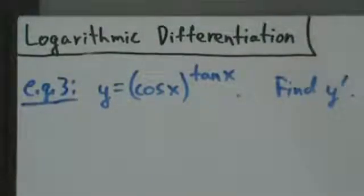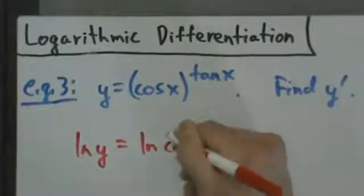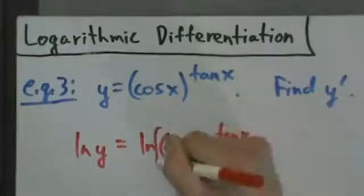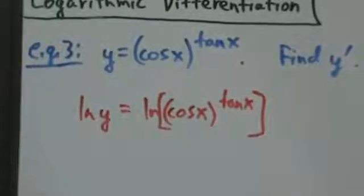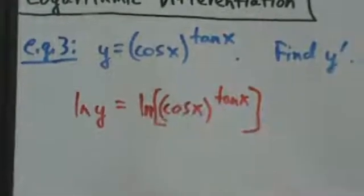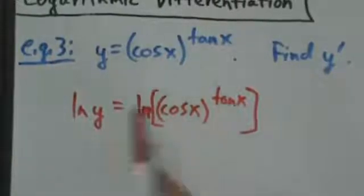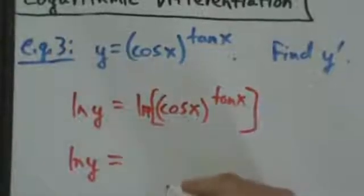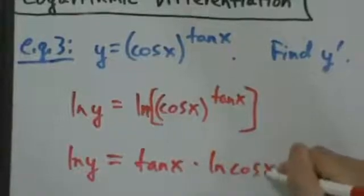The first step is the same. Since y is already by itself, we just take the natural log of both sides. So natural log of y equals natural log of cosine of x to the tangent of x. We'll put square brackets just to make it easier to see what's happening. The second step is always to use that pre-calculus power rule for logs, which says you can take the exponent out and write it as a factor. So natural log of y on the left, and then tangent of x times natural log of cosine of x on the right.